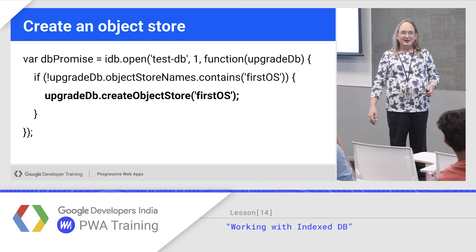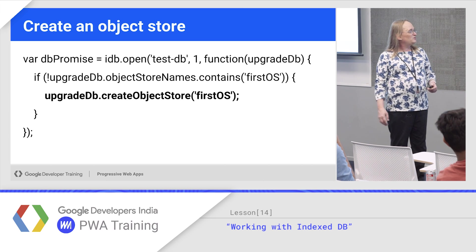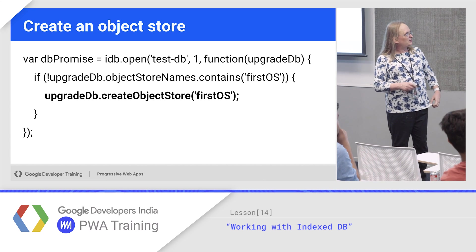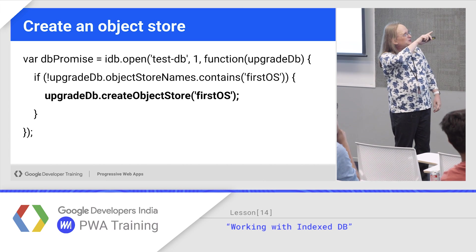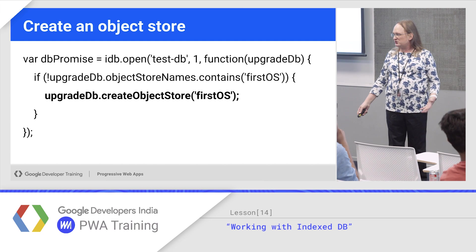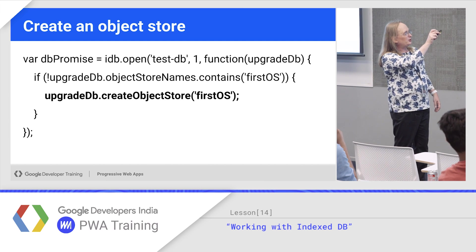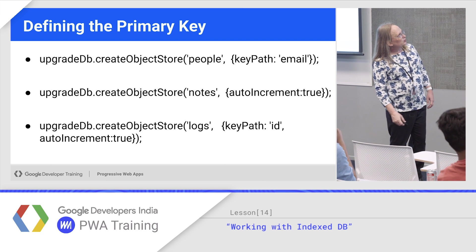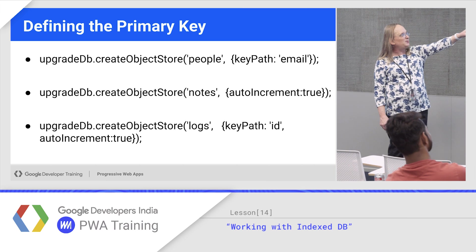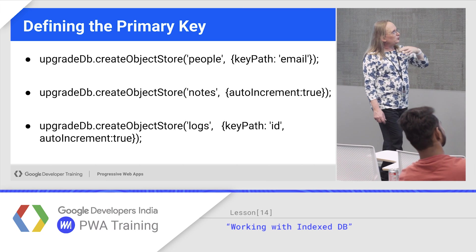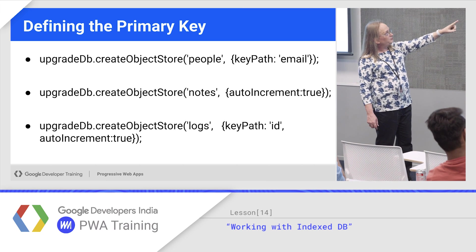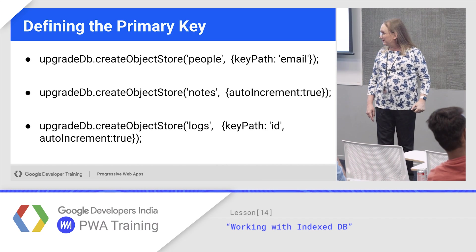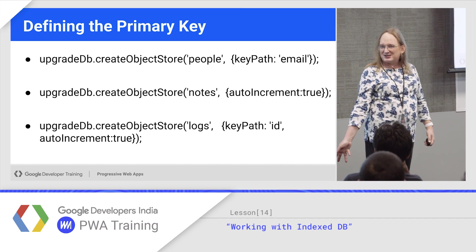If you call createObjectStore directly but an object store already exists, you'll get an exception and the whole thing will fail. So instead, do a quick check — make sure that objectStoreNames does not contain that object store. Make sure we don't have it already, and if we don't, go ahead and create it. You can create an object store with a key path if you need a primary key. You can also create it with auto-increment, which gives you an automatic serial number, but you don't have direct access to that.